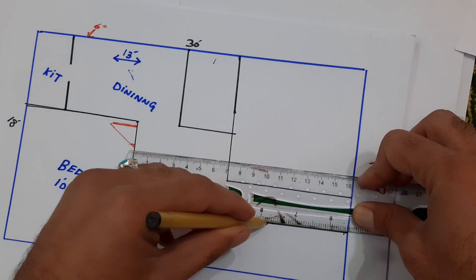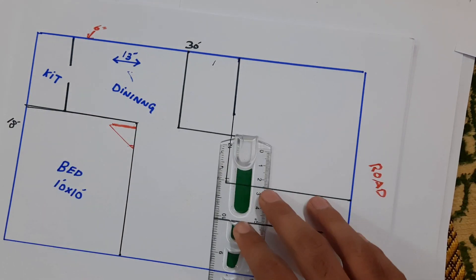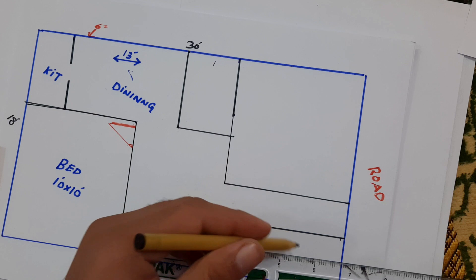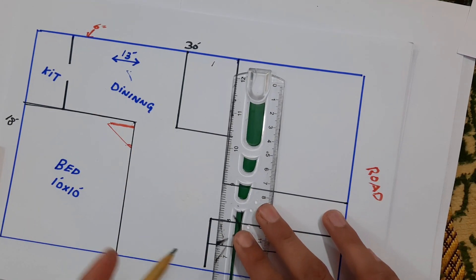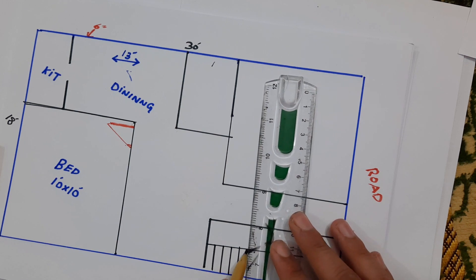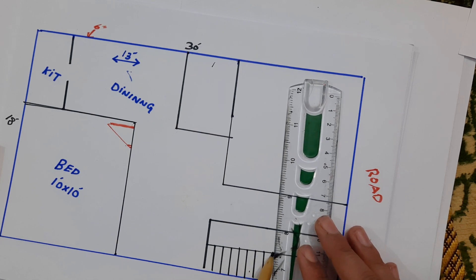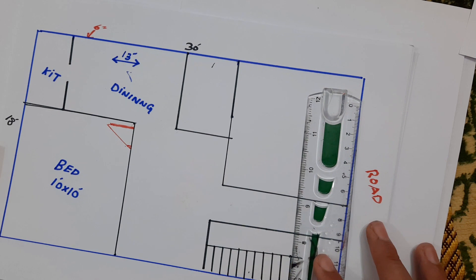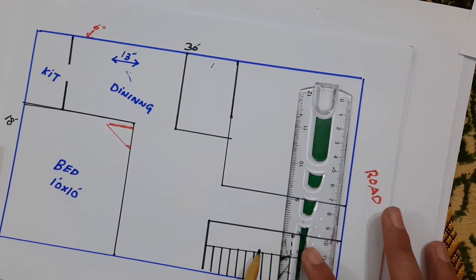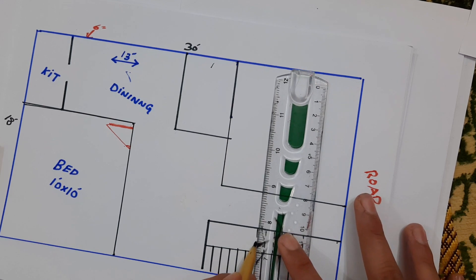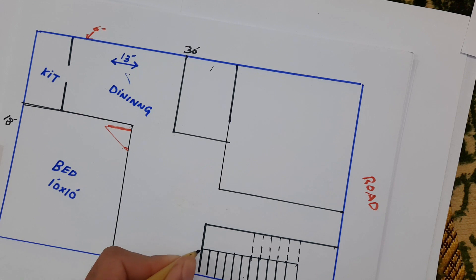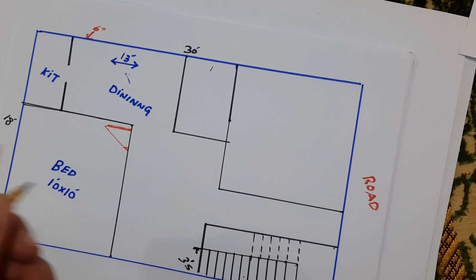Okay, this is tiered design for first floor. This is landing which is about 3.5 feet and each flight width is also 3.5 feet. Okay, so guys, this is living room.